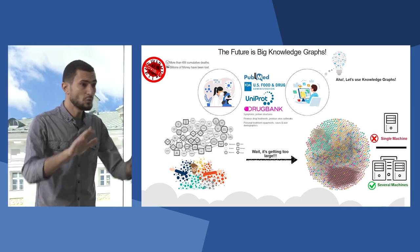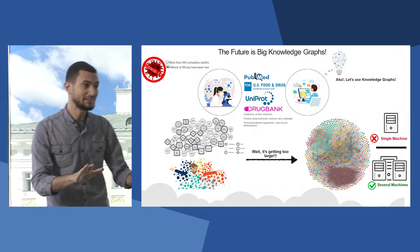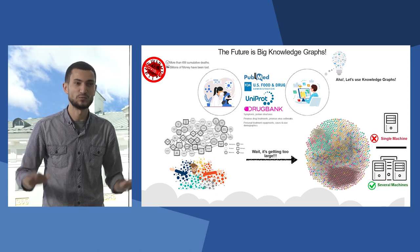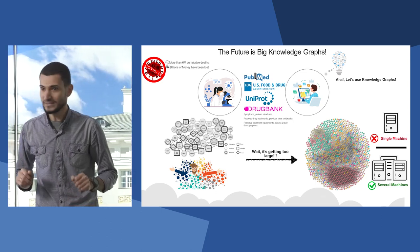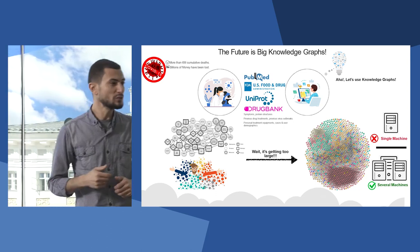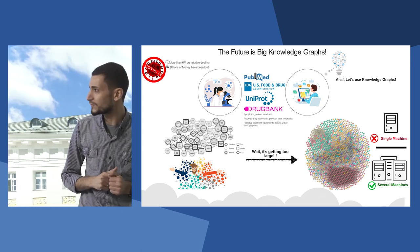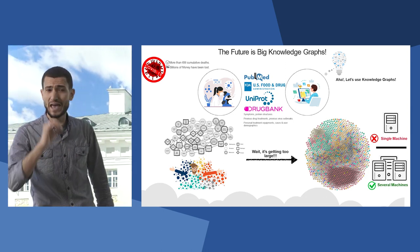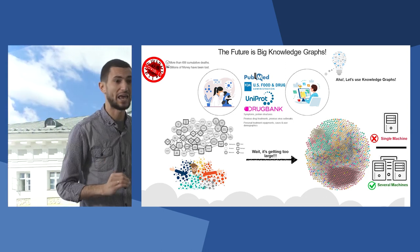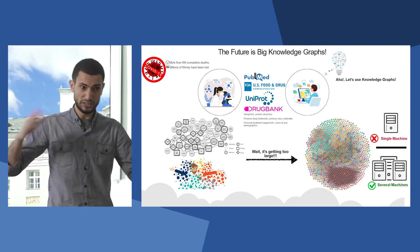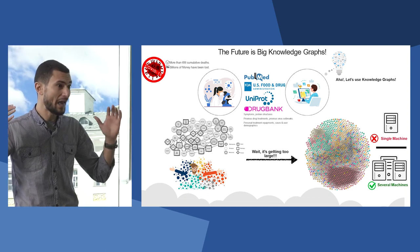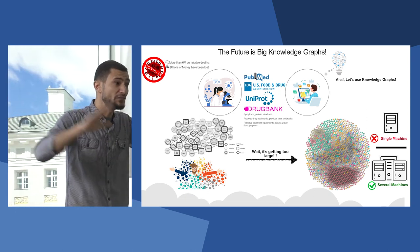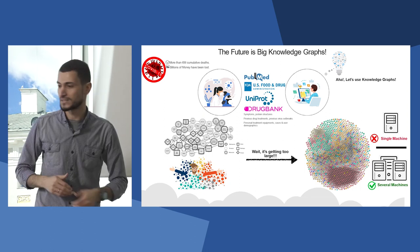You know what? Don't worry. Data and computer science were there to find a solution. They said we can use knowledge graphs. Knowledge graphs are an efficient means to find, connect, and integrate data from different data sources.